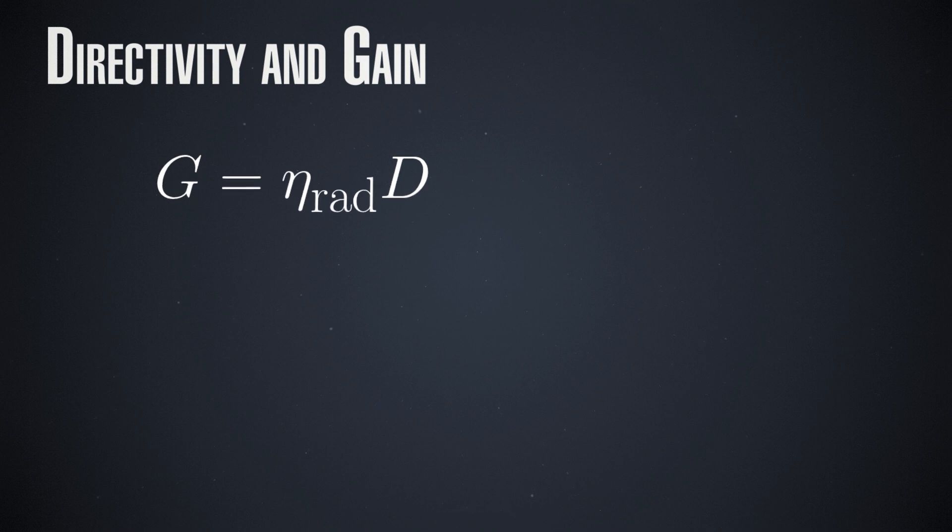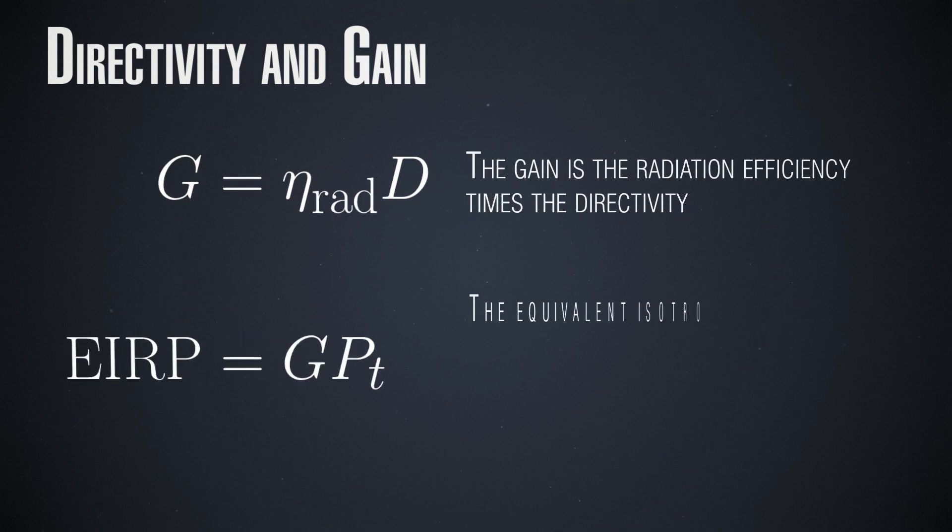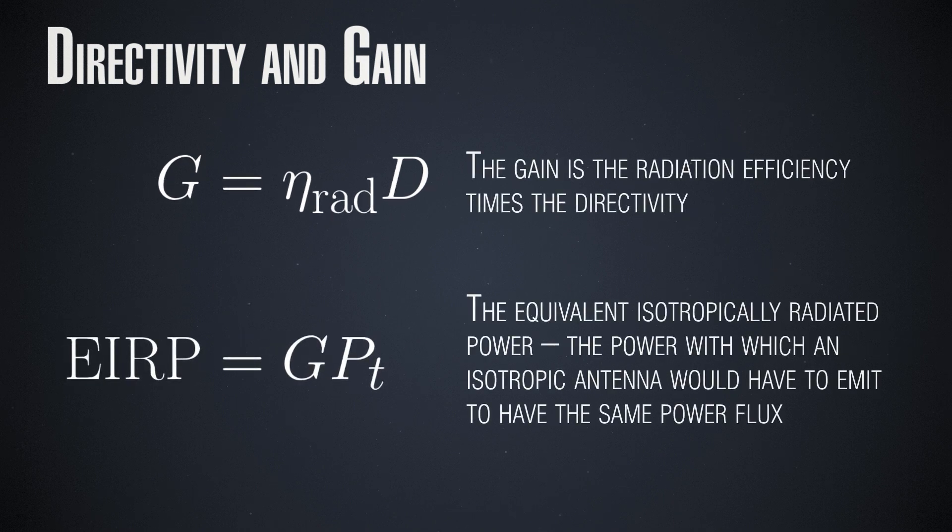Well, we only care about the direction in which we are actually emitting, so we can approximate a directive antenna as an isotropic such which has a total power large enough to give us the same power density in our desired direction. Such an antenna would have to emit more power than our antenna really does, since it will be evenly spread, but we can easily compute its total emission power by demanding that the power in our desired direction remains the same.